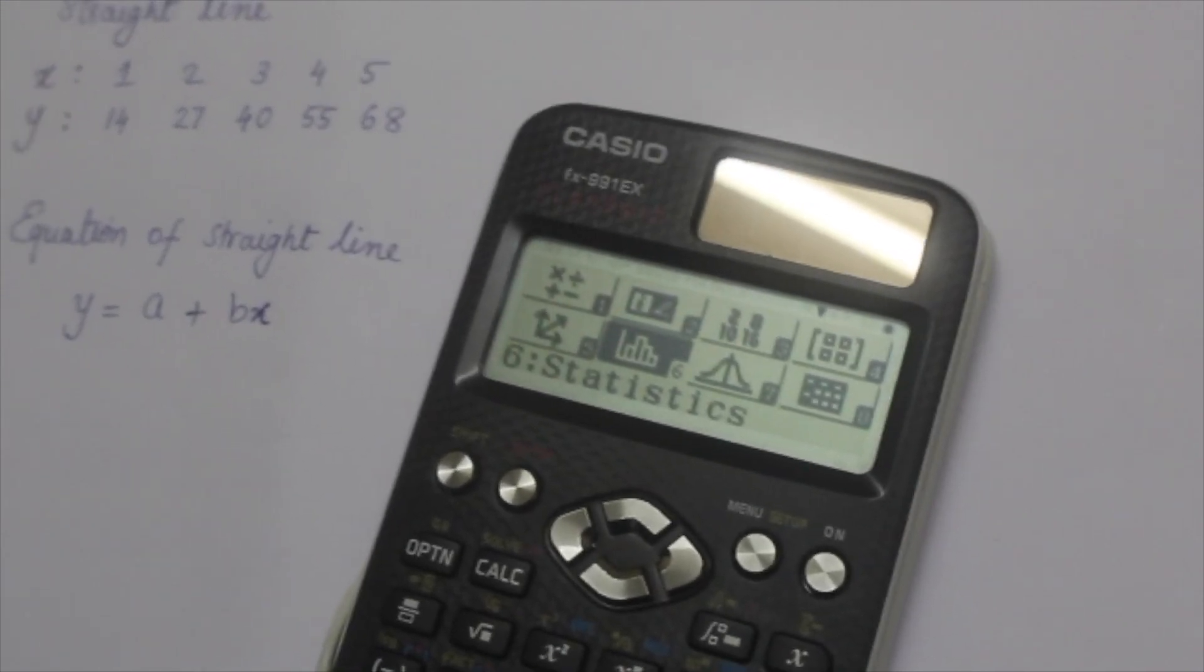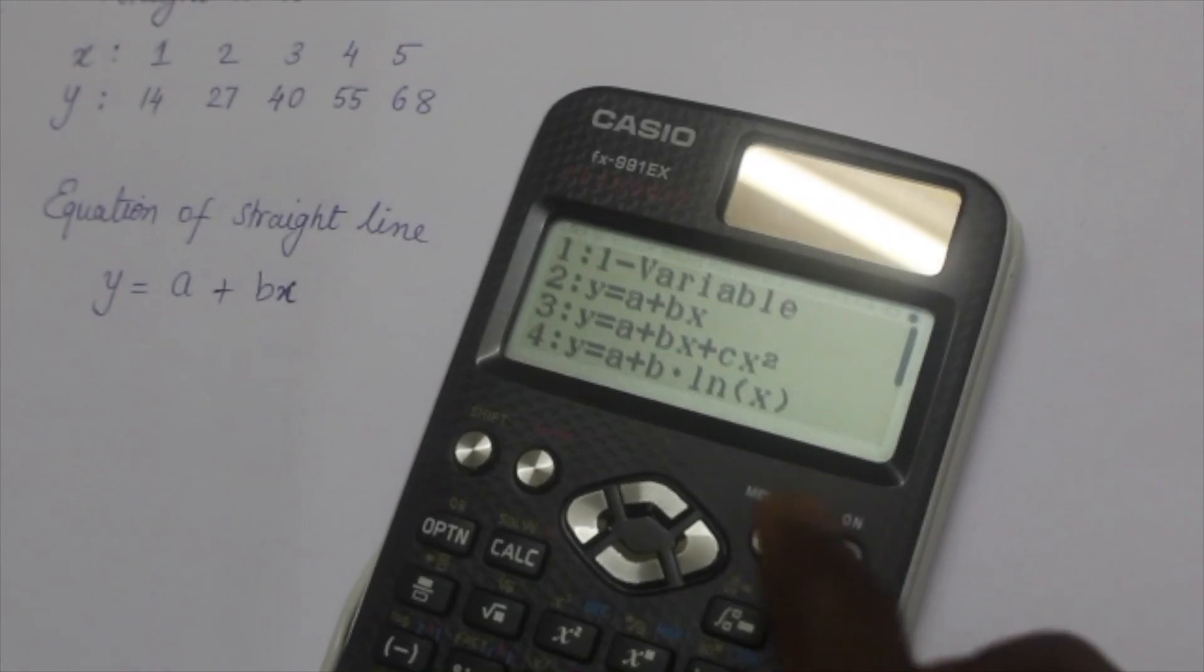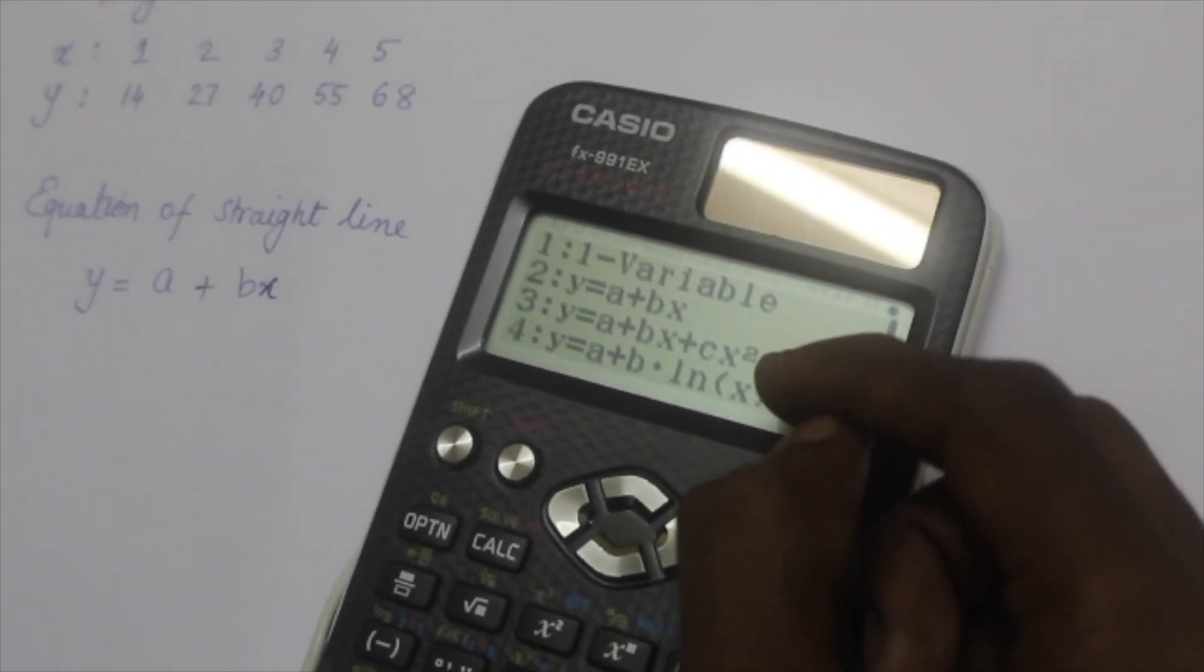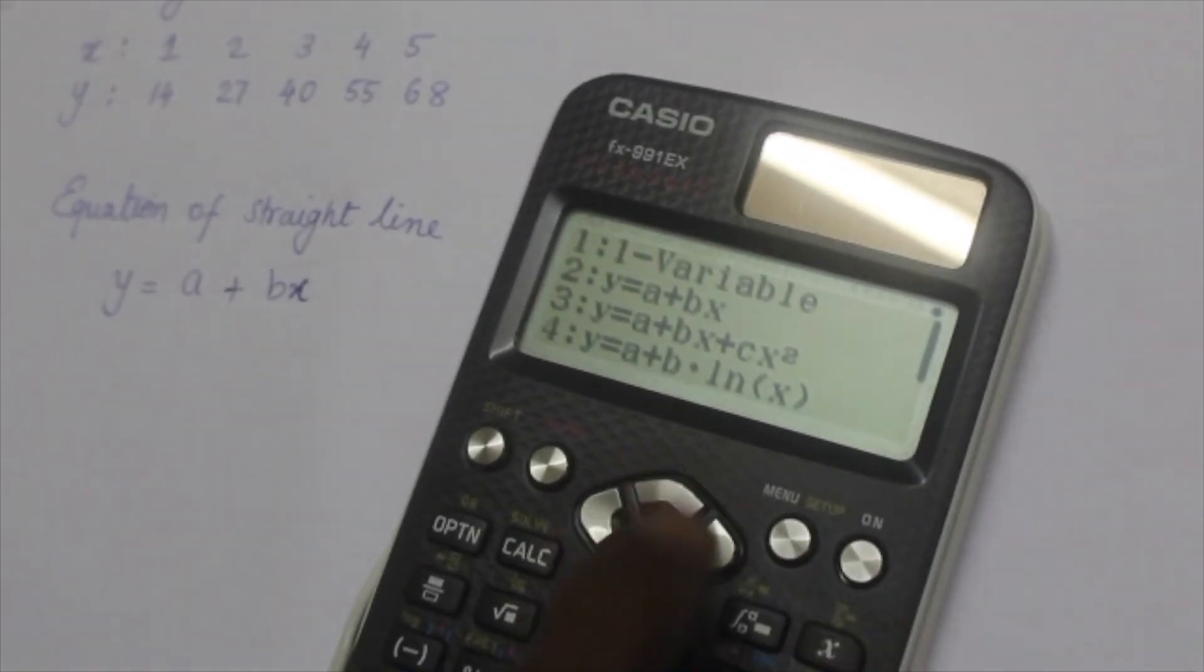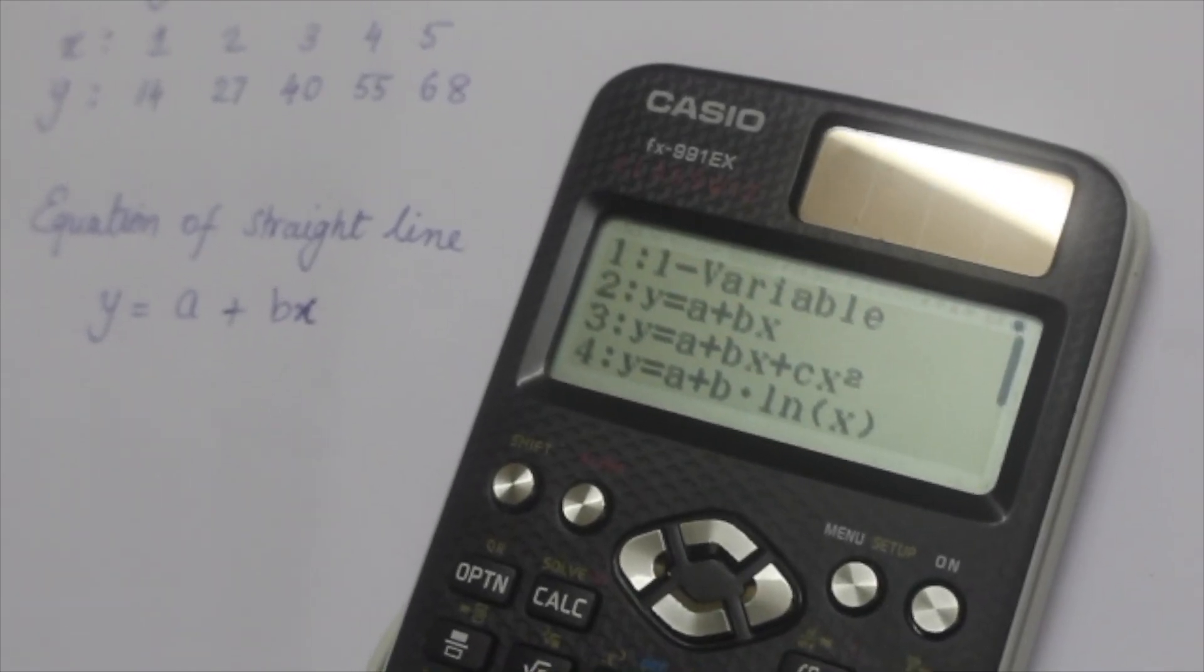Press 6 and you can see some equations: one variable equation, a straight line, a quadratic equation, and a logarithmic equation. Choose the second equation, that is y is equal to a plus bx.